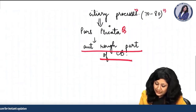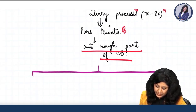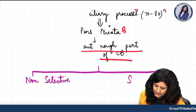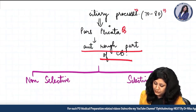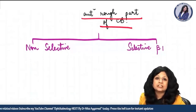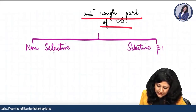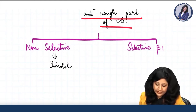We can divide beta blockers into two categories: non-selective and selective. The selective beta blockers are selective beta-1. Among the non-selective drugs, the most popular is timolol, which is the most commonly used non-selective beta blocker.